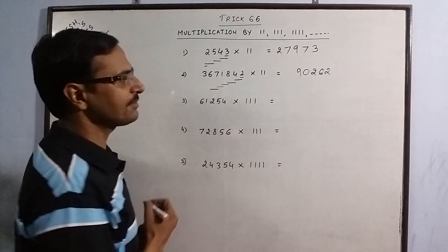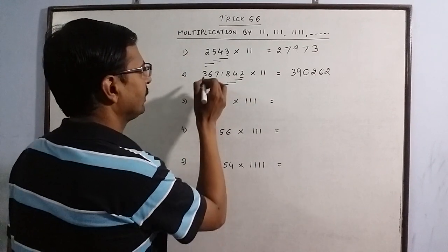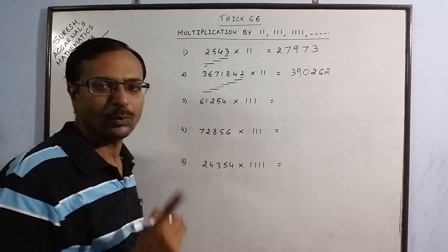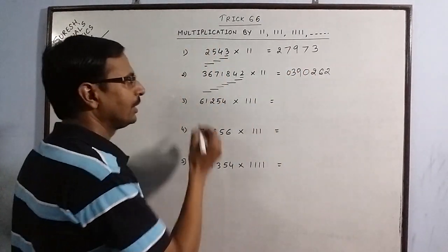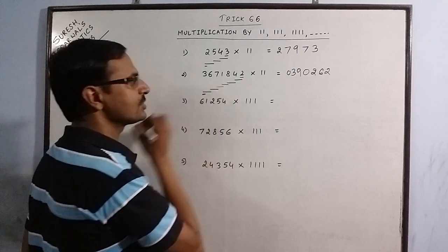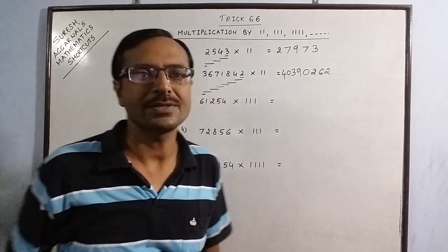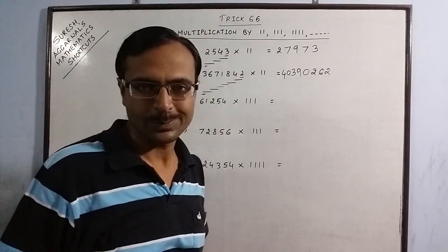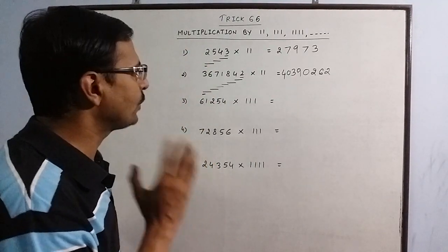6 plus 7, 13, 3, again 1 carry. 3 plus 6, 9, 1 carry 10. So 0, again 1 carry. And finally the last digit is to be written singly, 3 and 1 carry 4. So the required product is 40390262. With little practice you can master this. It is a very easy process.